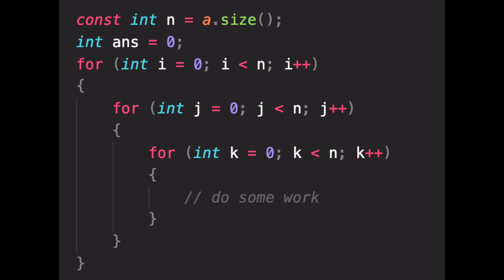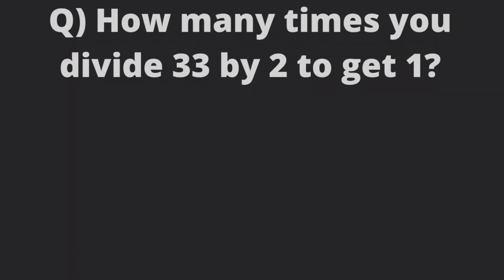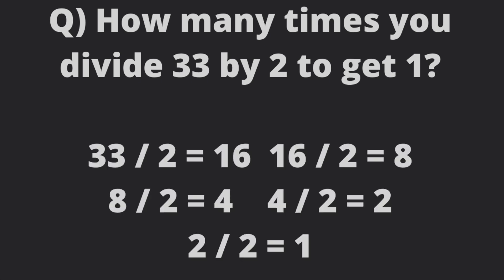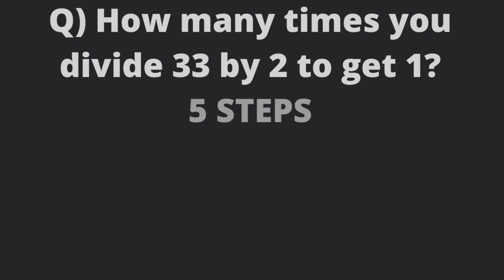Now for the next example, let me first of all tell you some basic maths. If you divide a number n by 2 repeatedly, how many steps will it take to make it 1? Let's try with 33. 33 divided by 2 is 16, divided by 2 is 8, divided by 2 is 4, divided by 2 is 2, and divided by 2 is 1. So it took 5 steps, which is log 33 to the base 2.